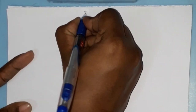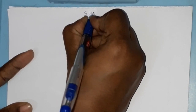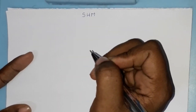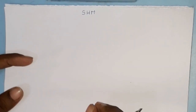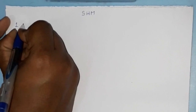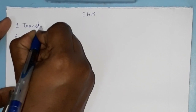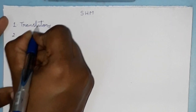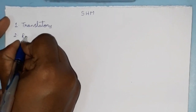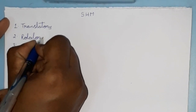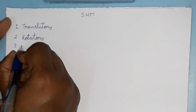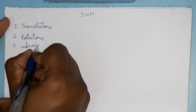Today we will discuss about Simple Harmonic Motion, SHM. A motion of a physical system can be classified into three types: translatory motion, rotatory motion, and vibratory motion.